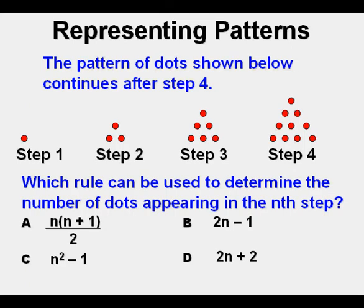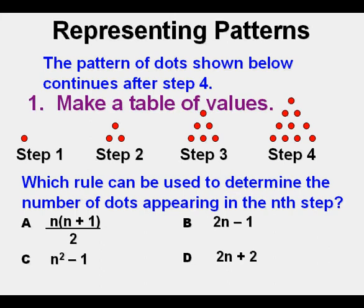Here's a first problem: the pattern of dots shown below continues after step four. Which rule can be used to determine the number of dots appearing in the nth step? The first step we need to take is to make a table.